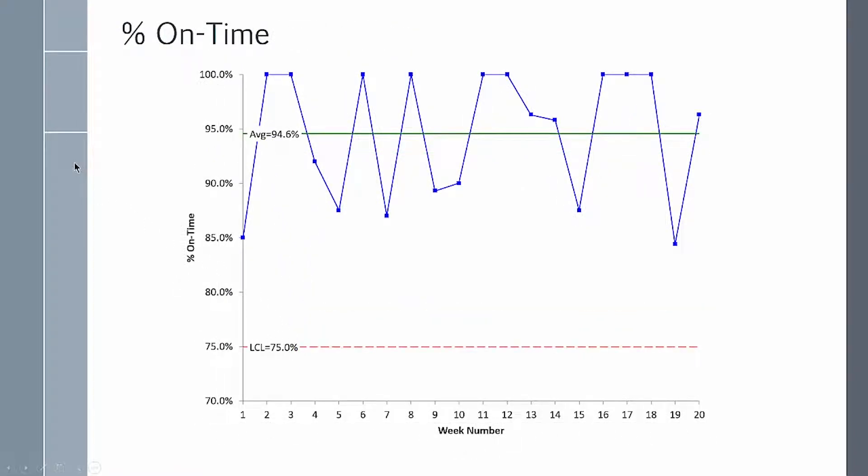Another example of a control chart is percent on time. It can be percent on time to your customers, your suppliers to you, airlines, whatever can be measured in terms of on time. And this example has an average of 94.6% on time. And you can see it can't be greater than 100% here at the top.